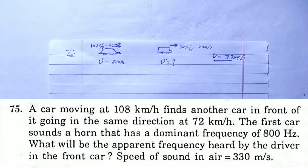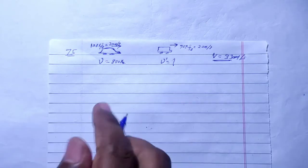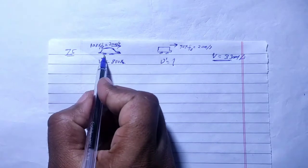Solution, Chapter 16, Sound Waves, Question number 75. A car moving at 108 km per hour finds another car in front of it going in the same direction at 72 km per hour. The first car sounds a horn that has a dominant frequency of 800 hertz. What will be the apparent frequency heard by the driver in the front car? Speed of sound in air is 330 meter per second.